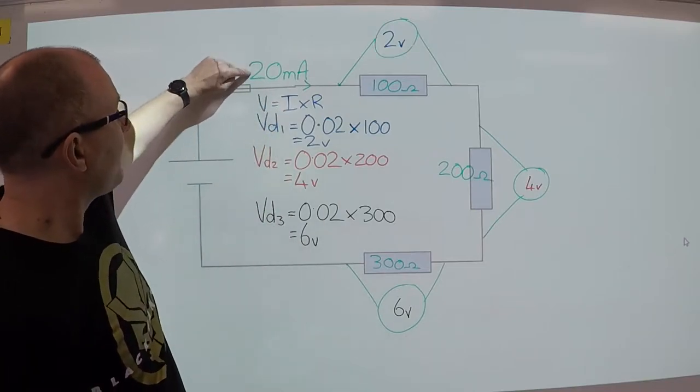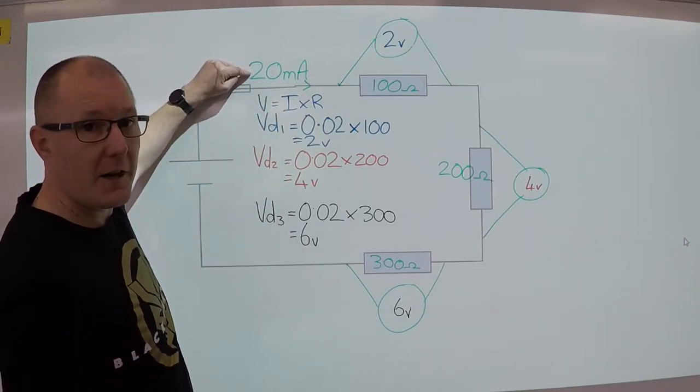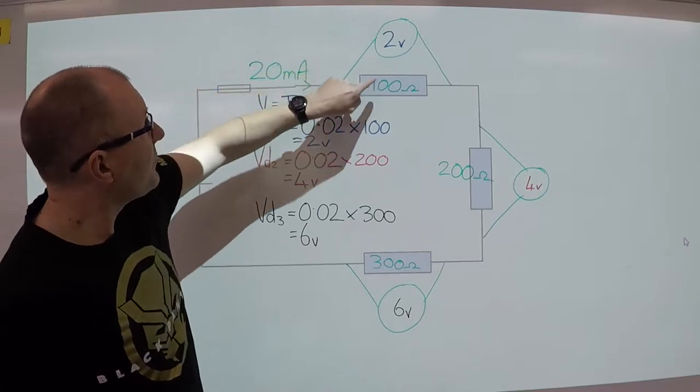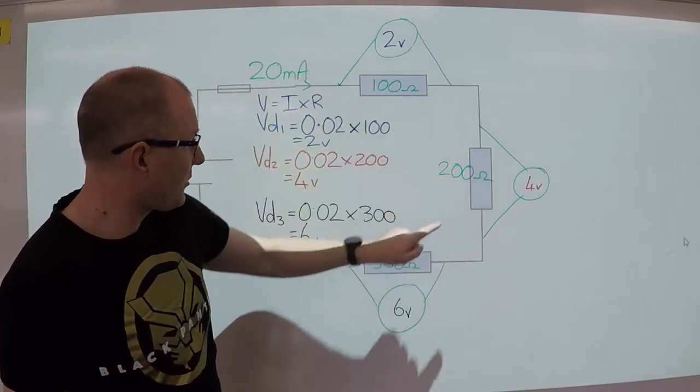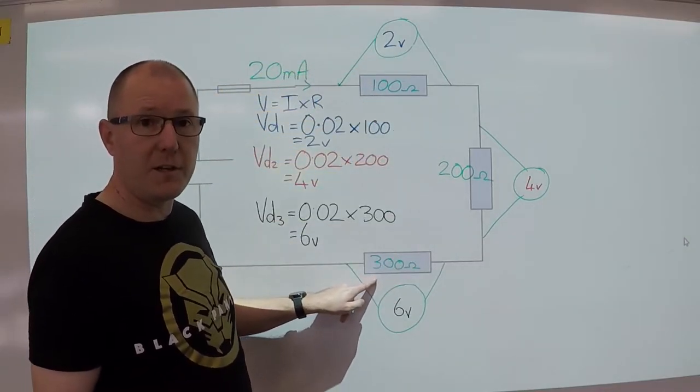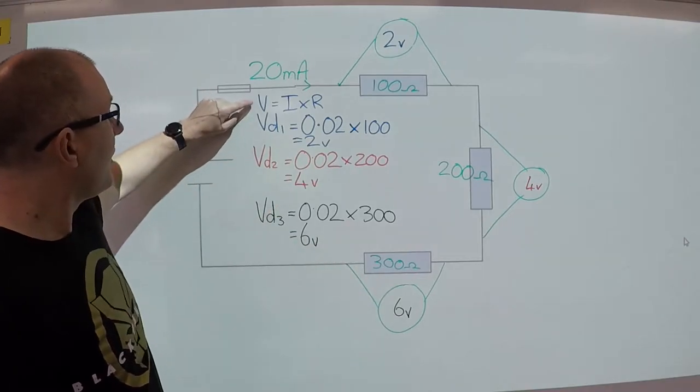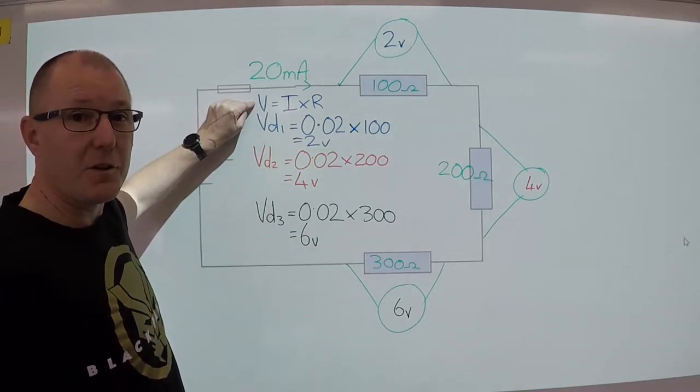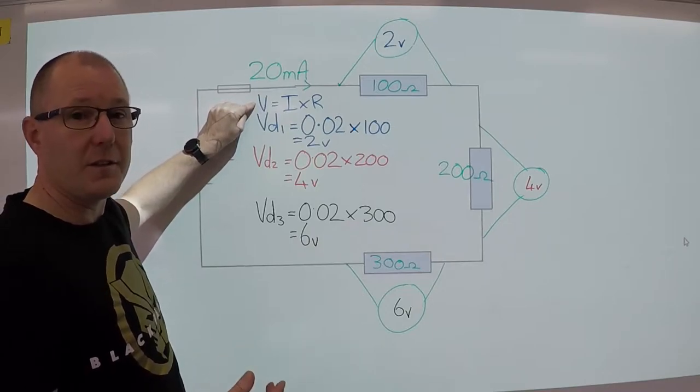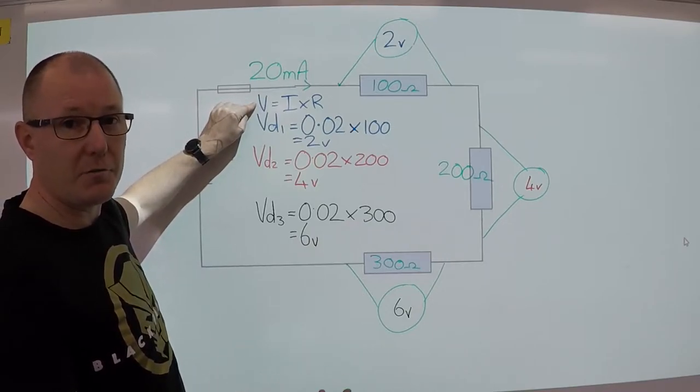So if we've got 20 mA of current and we've got 100 ohms, 200 ohms and 300 ohms in our circuit on separate resistors, we have to use V equals I times R, or voltage equals the current multiplied by the resistance.